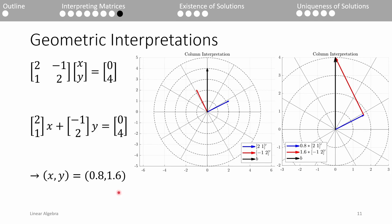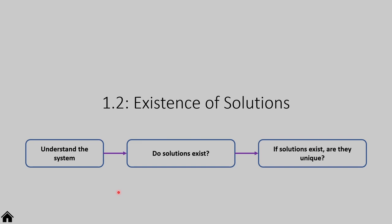Whether you use the row or column interpretation is up to you. You definitely need to understand both, but you can use whichever one is easier for you. Now that we learned ways to interpret a system of equations, let's talk about the solution. After all, that's why we formed linear systems in the first place. But solutions aren't always guaranteed to exist, so how do we know if they do?